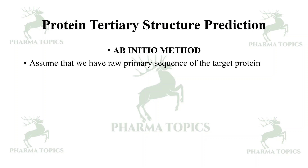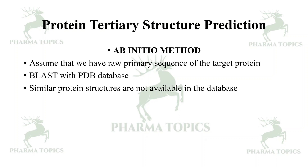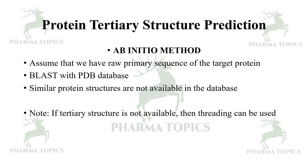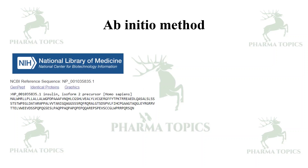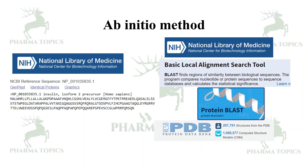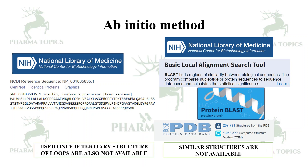Next is the ab initio method. Assume that we have a raw primary sequence of a target protein. After BLASTing the PDB, similar protein structures are not available. If the tertiary structure of the loops are also not known, only then the ab initio method is used — you start from scratch. That is called the ab initio method; it is a Latin term meaning from the beginning.